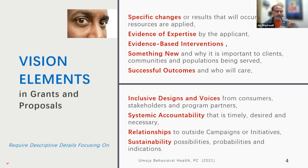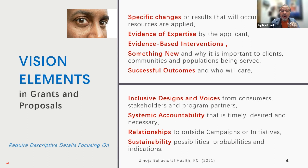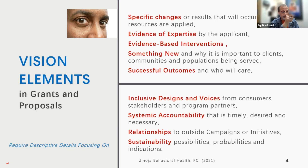This next piece has three quadrants: inclusive designs and voices, systemic accountability, and relationships and sustainability. These sections almost always stay throughout the vision, design, capacity, and approach because as a writer you always want to have these things within your proposal. These are elements that speak directly to the grant reviewer. The funder focuses on what's up top: the changes, evidence of expertise, EBIs, whether it's new, and the benefits.